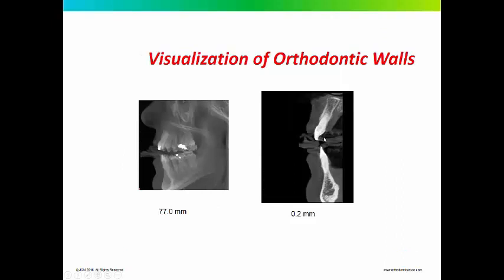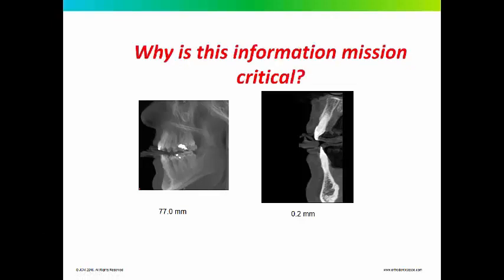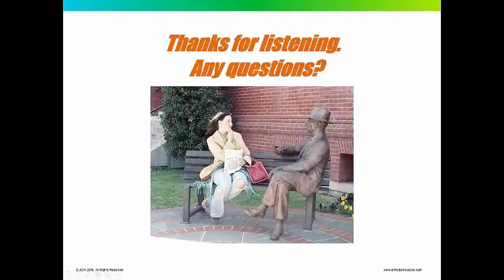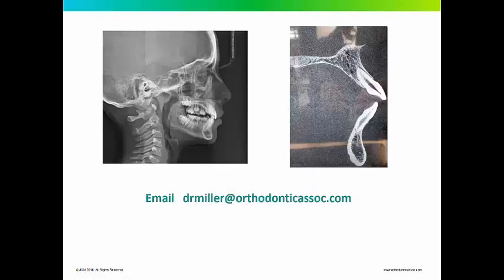It's the ability to visualize the orthodontic walls — the limitations to orthodontic tooth movement — that is critically important for anyone moving teeth. If you move the tooth orthodontically through the cortical plate, you're going to develop bone dehiscence or fenestration. That doesn't mean it will have an immediate result on the gingiva; it could take years for the tissue to strip, if at all. But as orthodontists, there's a good argument that whenever possible, you should attempt to keep the teeth within the bony housing. Thanks for listening. If you have any questions, you can email me at drmiller@orthodonticassess.com.